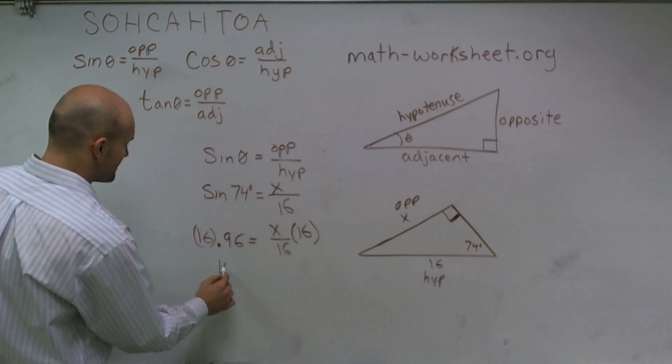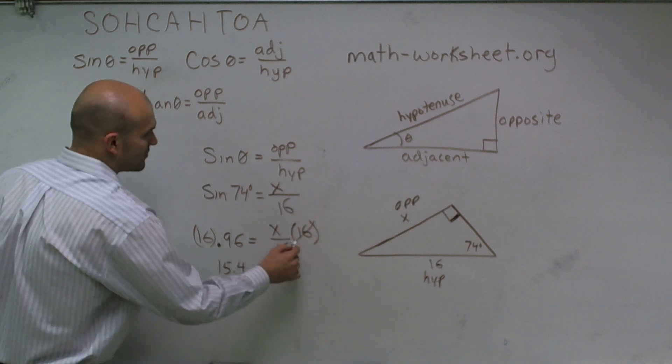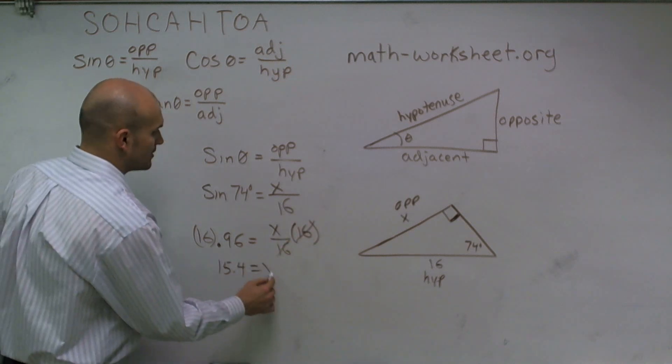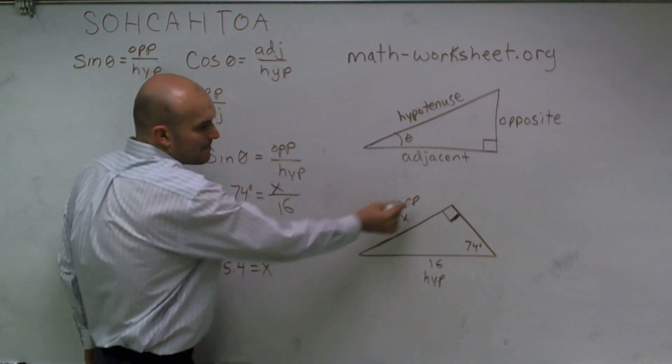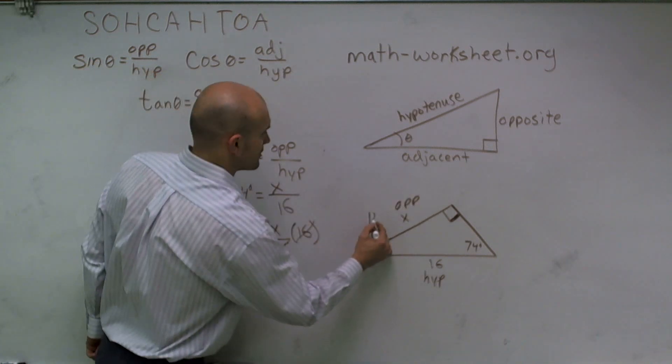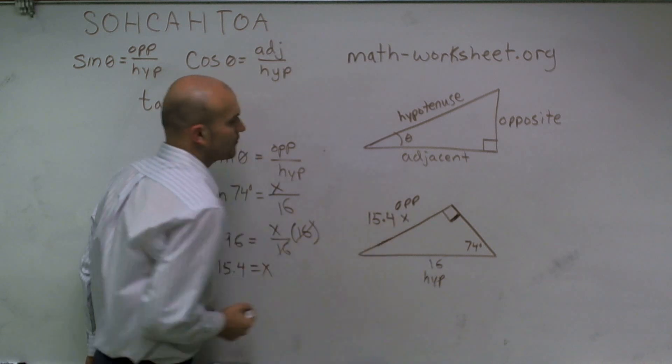When I do that, I get 15.4, those cancel out to 1, equals x. Therefore, I've determined that the opposite leg of my triangle is 15.4.